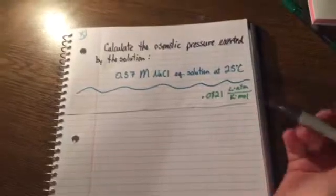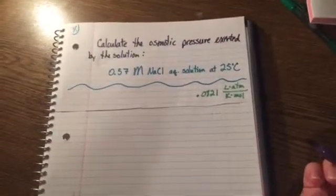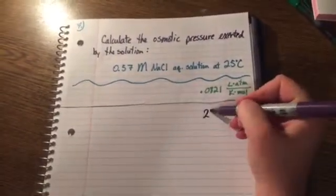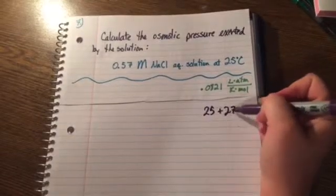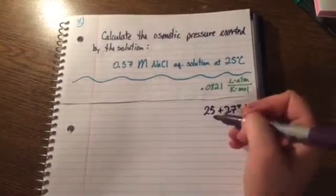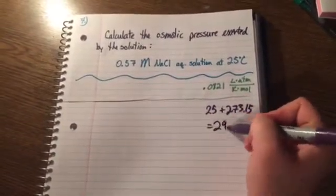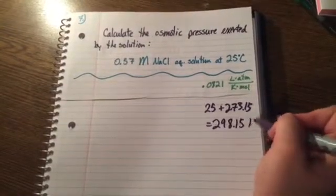So for the first thing, we're going to take our 25 degrees Celsius and we're going to change that into kelvins. So 25 plus 273.15 gives us 298.15 K.